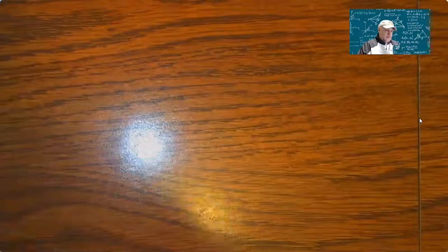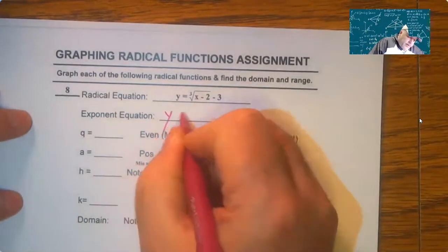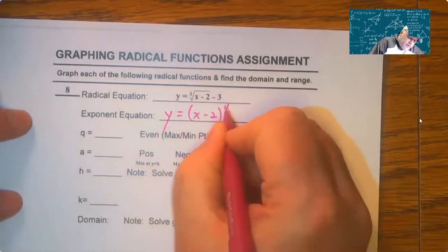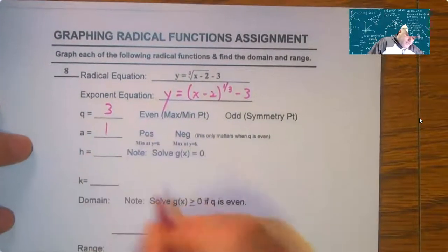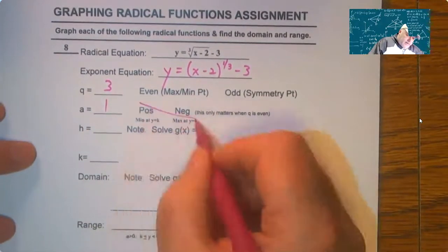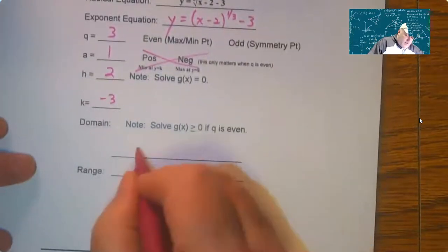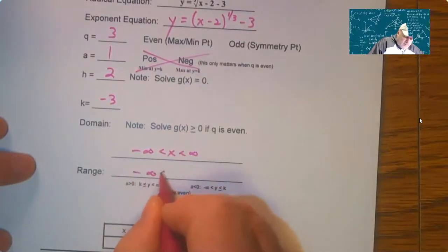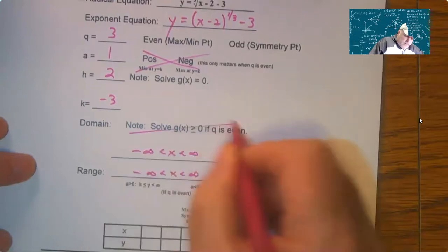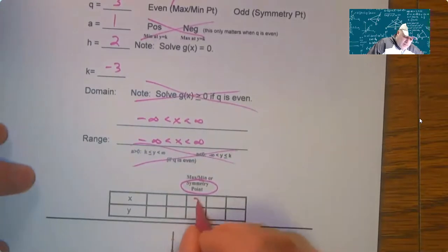Problem eight is a cube root again. So none of the specific stuff matters with domain and range. So Q is three, A is one. So this does not matter. G of x equals zero, we get two and negative three. So domain is all reals, range is all reals. This does not matter. And we have a symmetry point at two, negative three.